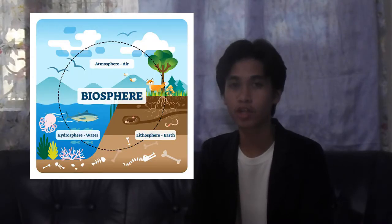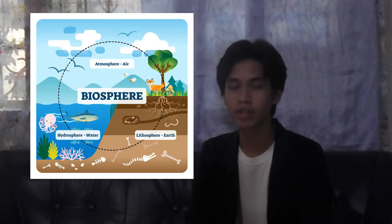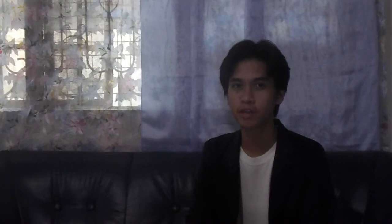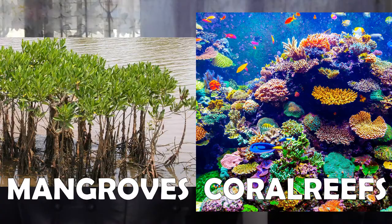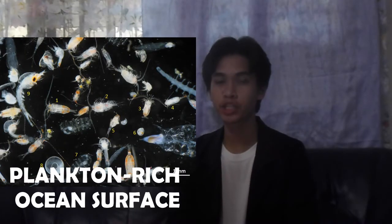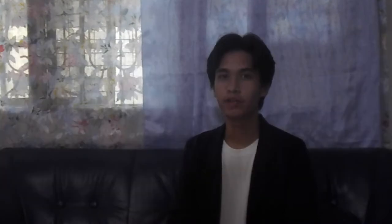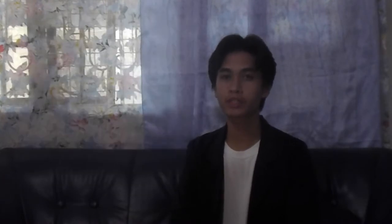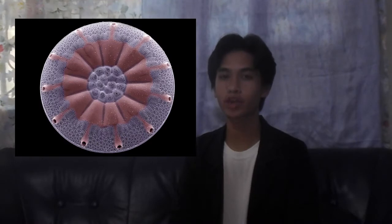The biosphere is the set of all life forms on Earth. It covers all ecosystems — from the soil to the rainforest, from the mangroves to the coral reefs, and from the plankton-rich ocean surface to the deep sea. For the majority of life on Earth, the base of the food chain comprises photosynthetic organisms.